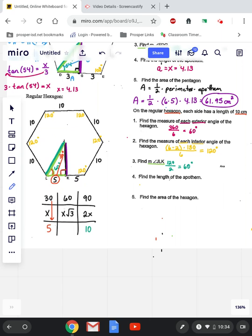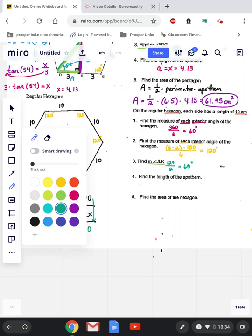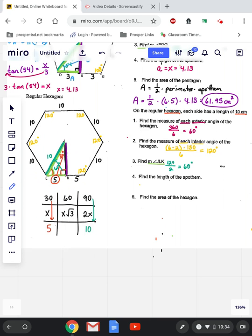So if X is 5, that means 2X is 10. So whatever side is across from 90 equals 10. Across from 90, this side is going to be 10. And if X is 5, that means X square root of 3 would be 5 square root of 3.